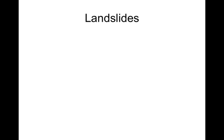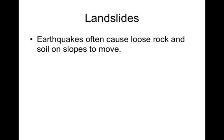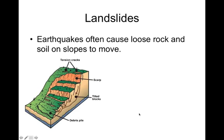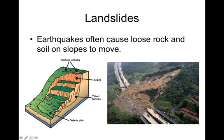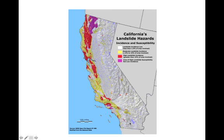The next earthquake hazard is landslides. Earthquakes often cause loose rock and soil on the slopes of mountains and hills to move. Tension cracks form and material falls down the hill, causing destruction. This does not require wet land — it can just be the side of a mountain shaking off. Along the San Andreas Fault is where the majority of landslide occurrences happen, and up north there are more because of the more mountainous terrain, whereas down south it's more desert-like.